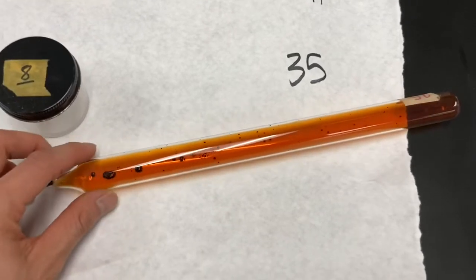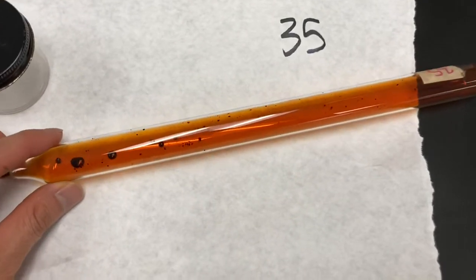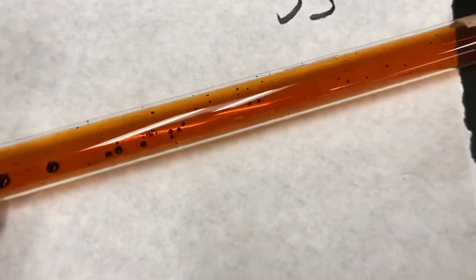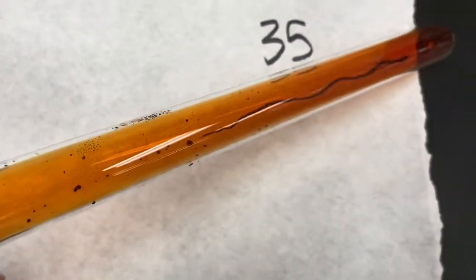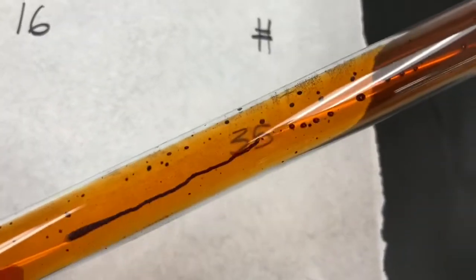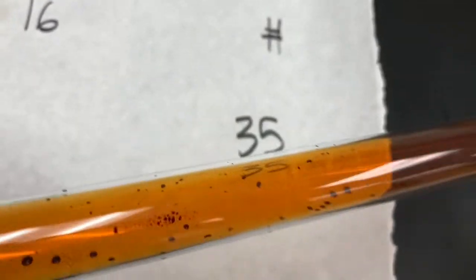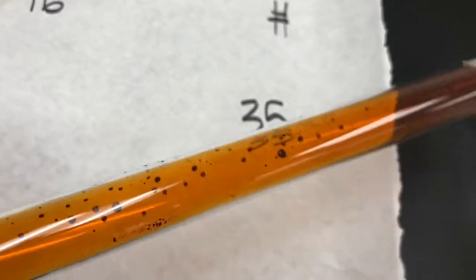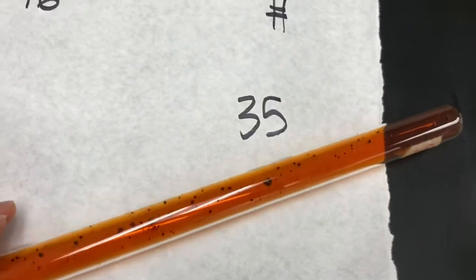Tour of the elements. So number 35, the atomic number here. It's this orange gas, but it's also liquid. What is going on there? Okay, moving on.